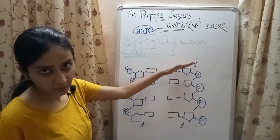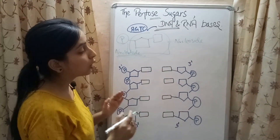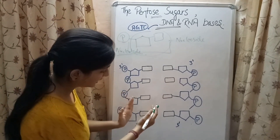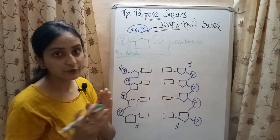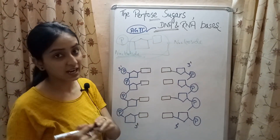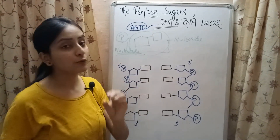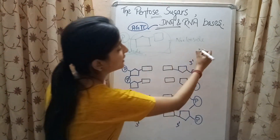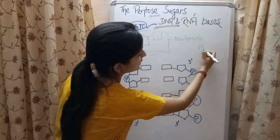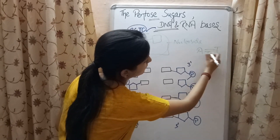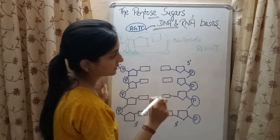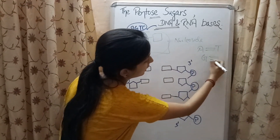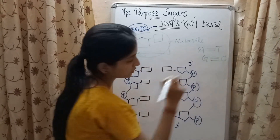According to Watson and Crick, these two strands of DNA are attached together through hydrogen bonds, and these hydrogen bonds are formed between specific pairs of bases. Adenine pairs with thymine with double hydrogen bonds, whereas guanine pairs with cytosine with triple hydrogen bonds.